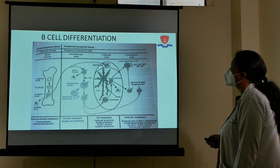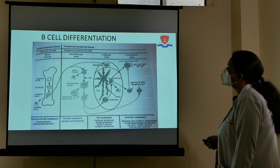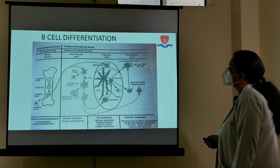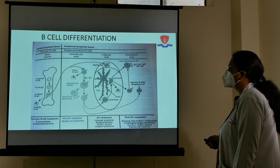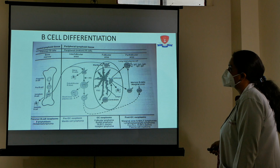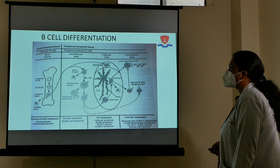You always have to remember these two differentiation stages: precursor B cells and peripheral mature B cells, because different types of lymphomas develop from different cell types. Lymphomas are classified and named based on the stage at which the cells are maturing. When they develop from precursor cells, they are called lymphoblastic leukemias.